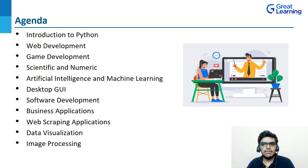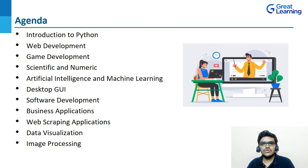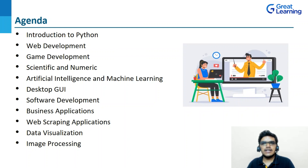Moving next, we are covering web scraping applications. We are having several web scraping tools like Selenium and many more. Next we are having data visualization, which means analyzing the data. We are having several tools for data visualization such as Matplotlib, Seaborn, Plotly and many more — using these tools you can plot graphs. Next, we are having image processing, which is a method in which we perform operations on an image and find useful insight or information from it. We are having several libraries for image processing such as OpenCV, SciPy and many more.